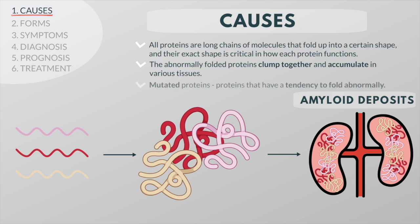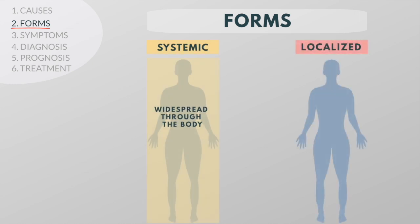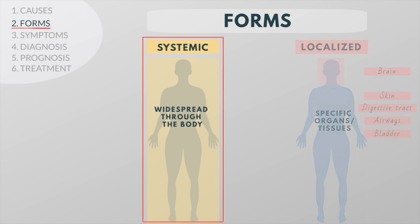There are many different proteins that can fold abnormally. Some amyloid proteins are mutated versions of normal proteins, while others are normal proteins that simply have a tendency to fold abnormally. Amyloid deposits may be systemic or localized. Localized amyloidosis occurs when amyloid is deposited in specific organs or tissues — for example, amyloid accumulates in the brains of people with Alzheimer's disease. Localized deposits may also form in the skin, digestive tract, airways, or bladder.